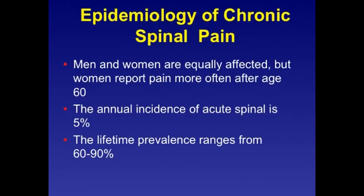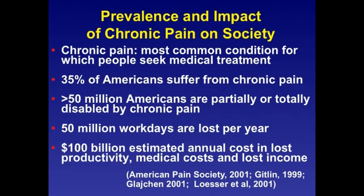Men and women are basically equally affected, but women tend to report more pain more frequently, especially after the age of 60. The annual incidence of acute spinal pain is 5%, and the lifetime prevalence of pain ranges from 60 to 90%. Chronic pain is one of the most common, if not the most common, condition for which people seek medical treatment. It is estimated that 35% of Americans suffer from chronic pain, either neuropathic pain or somatic pain, back pain or joint pain.